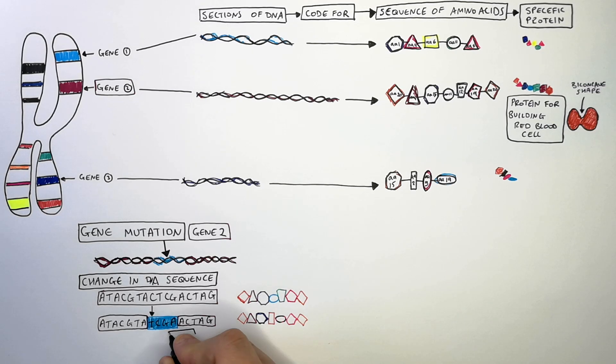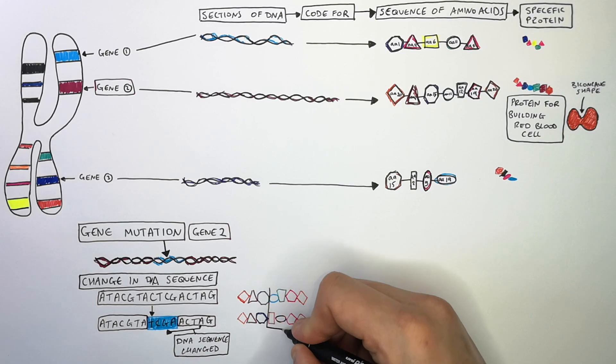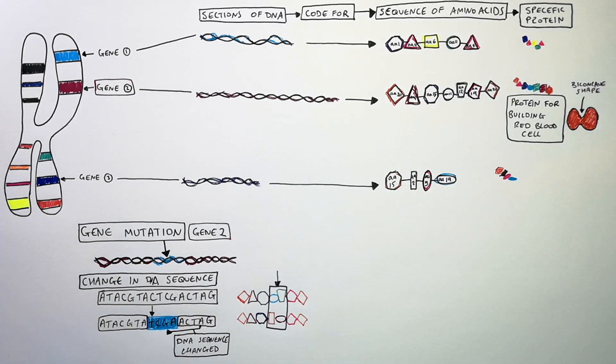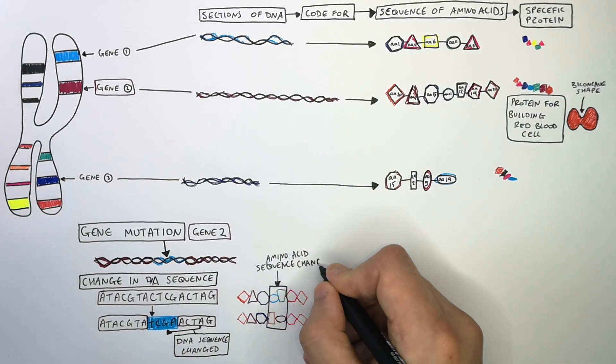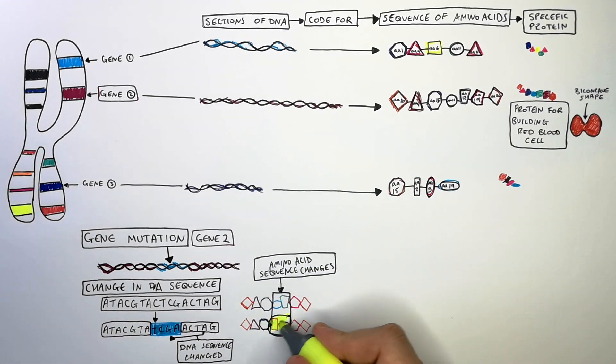So as you can see here, this is the bit where the DNA sequence changed. This bit here is where the DNA sequence changed. So where the DNA sequence changes, this is where the amino acid sequence is going to change as well. So as you can see, there is a change in amino acid sequence.